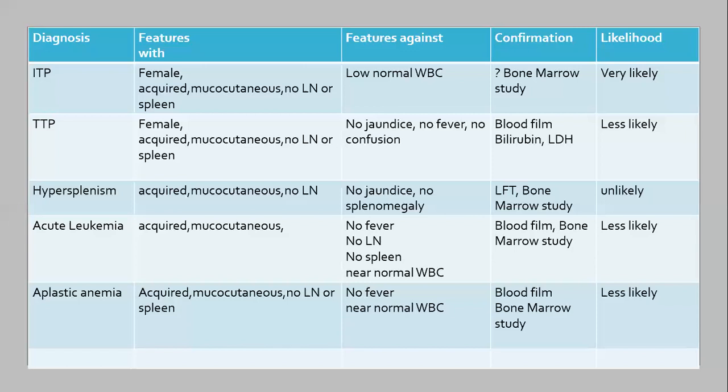Aplastic anemia can present with a bleeding tendency. These patients usually don't have lymphadenopathy or splenomegaly. However, in aplastic anemia we would expect fever due to leukopenia, and the presence of a normal white blood cell count is generally against aplastic anemia. But early in the disease, the first manifestation can be a drop in platelet count. Therefore, a blood film is very important, and if neutropenia is found, a bone marrow study is needed. As with leukemia, this diagnosis is less likely but cannot be excluded.